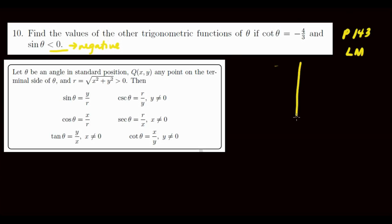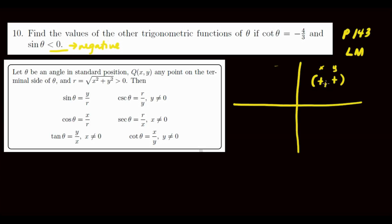Let's look at the quadrants. On the first quadrant, your sine and cosine are both positive. So cotangent, which is x over y, is plus over plus — so it's positive. Cotangent in quadrant one is positive. In the second quadrant, cosine is negative and sine is positive, meaning x is negative and y is positive. So cotangent here is negative. So maybe it's quadrant two.